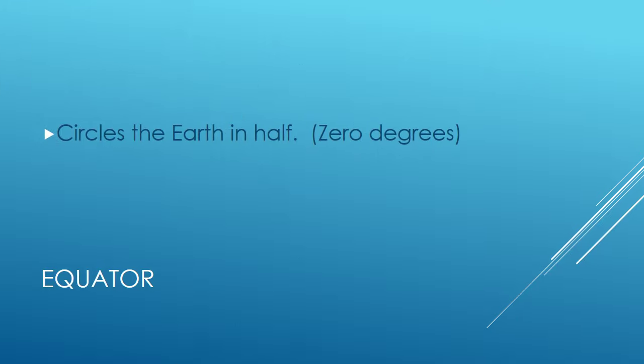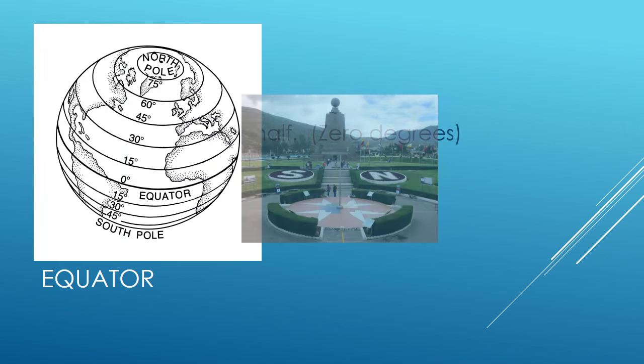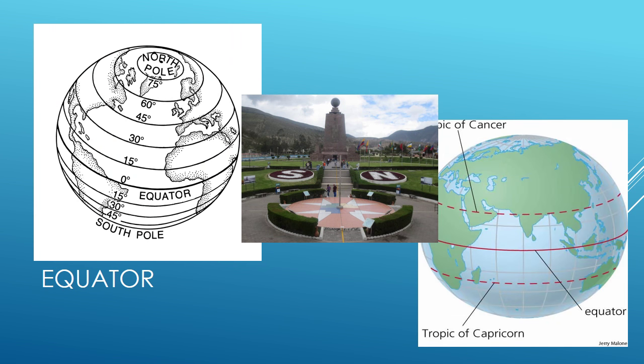The equator circles the earth in half and it's zero degrees. It's a very special latitude line that separates the northern hemisphere from the southern hemisphere. The picture in the middle is actually where you can go to the equator — this picture is in Ecuador — and you can stand at the equator with one side in the northern hemisphere and the other side in the southern hemisphere.